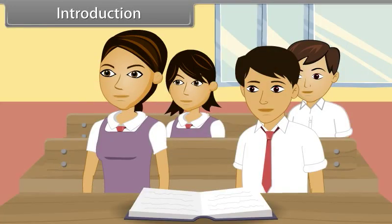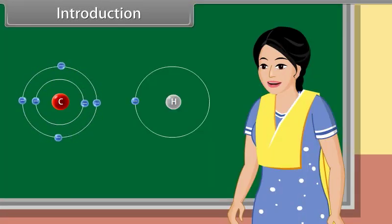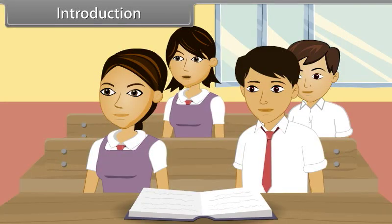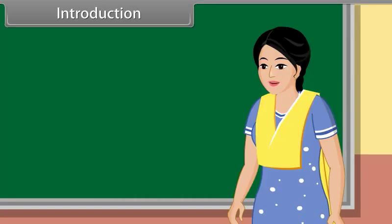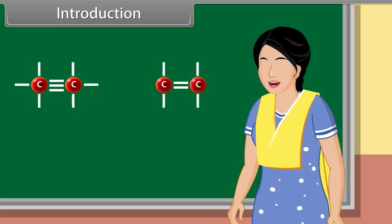Teacher, what is organic chemistry? Organic chemistry is the branch of chemistry that involves the study of carbon and hydrogen-containing compounds. How are the carbon-carbon atoms attached? The carbon-carbon atoms are attached by single bond, double bond, or triple bond, and the functional group present on the organic compound decides its chemical nature.